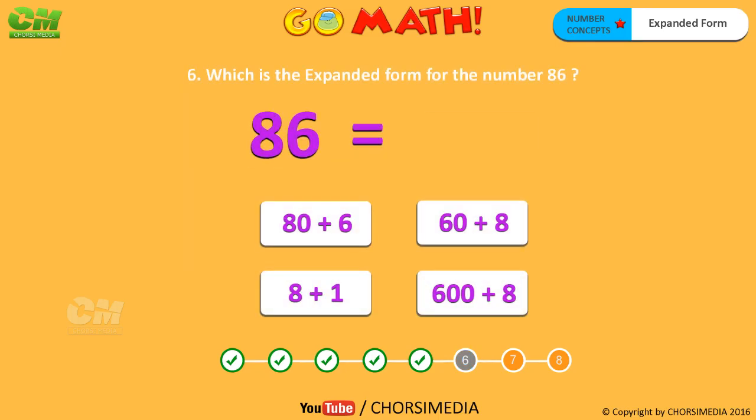Which is the expanded form for the number 86? The digit 8 is in the tens place, so the value of 8 is 80. The digit 6 is in the ones place, so the value of 6 is 6. Together, the expanded form for the number 86 is 80 plus 6. You are right, the correct answer is 80 plus 6.